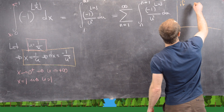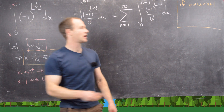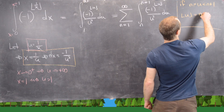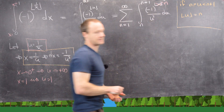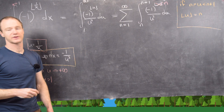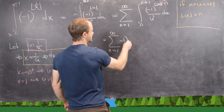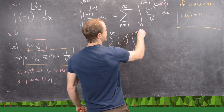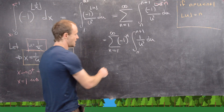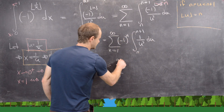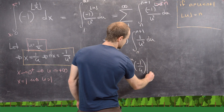If u is between n (inclusive) and n+1 (exclusive), we know the floor of u equals n. That allows us to replace the floor of u with n, and since n doesn't depend on u, we can pull it out of the integral. So we have the sum from n = 1 to infinity of (−1)^n times the integral from n to n+1 of 1/u² du. The antiderivative of 1/u² is −1/u, evaluated from n to n+1.